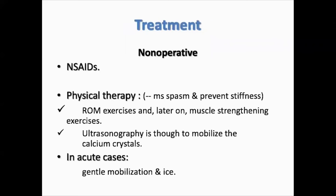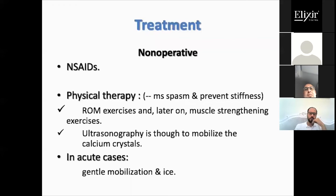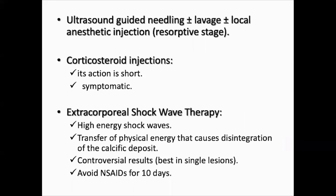Conservative management usually succeeds in most cases. It can include physical therapy to reduce muscle spasms and prevent stiffness, with gradual progressive muscle strengthening. Therapeutic ultrasound is thought to be able to mobilize the calcium crystals. Ultrasound-guided needling, lavage, and local anesthetic injection can be introduced. Corticosteroid injections can be considered. Extracorporeal shockwave therapy can sometimes be beneficial.